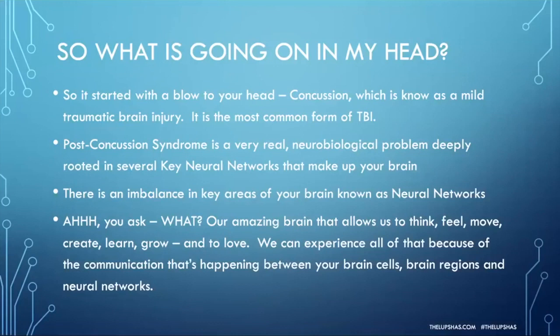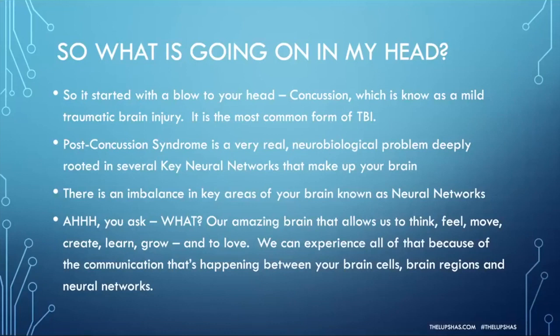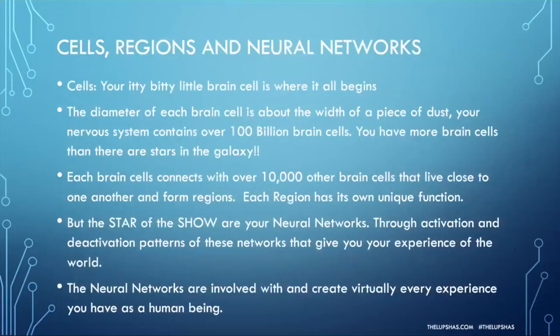So what's going on inside your head with a concussion? It starts with the blow to the head. A concussion is known as a mild traumatic brain injury and is the most common form of TBI. Post-concussion syndrome is a neurobiological problem deeply rooted in several neural networks that make up your brain. This is my passion — specializing in the recovery of brain injuries and stroke. Our brain is amazing, but it can't be replaced like other parts of our body. The brain allows us to feel, think, move, create, grow, and love. We can experience all of that because of the communication that happens between our brain cells, our brain regions, and our neural networks.